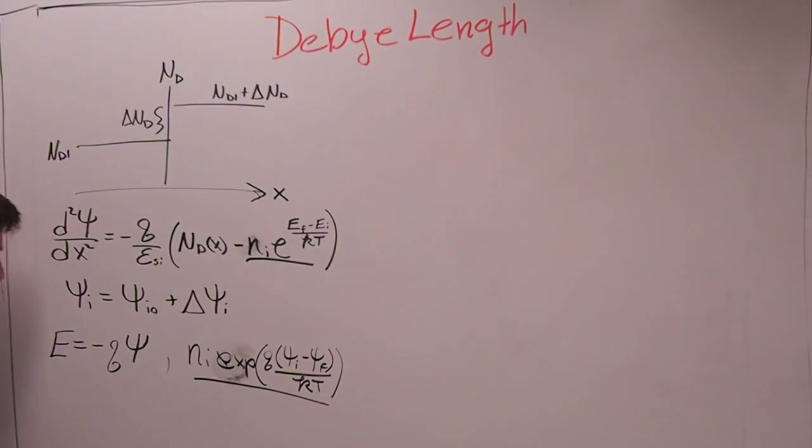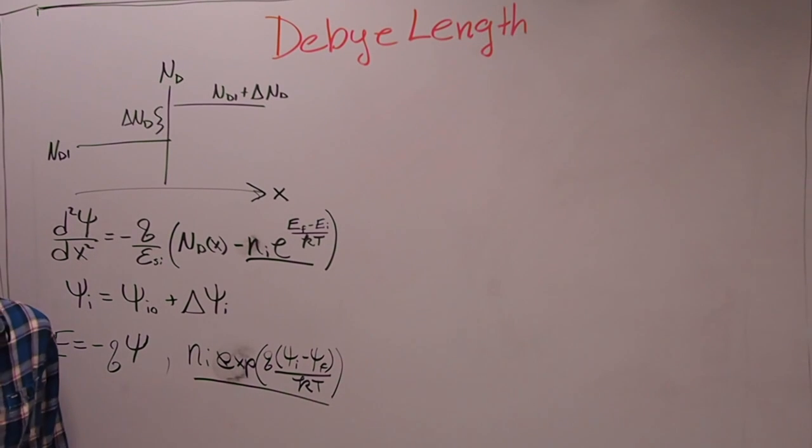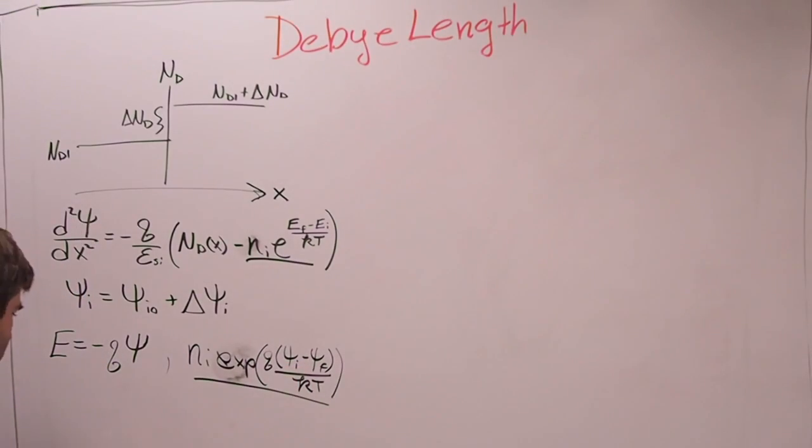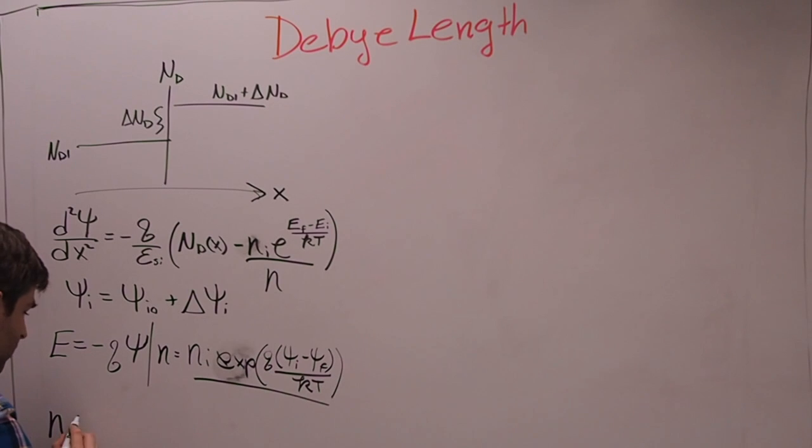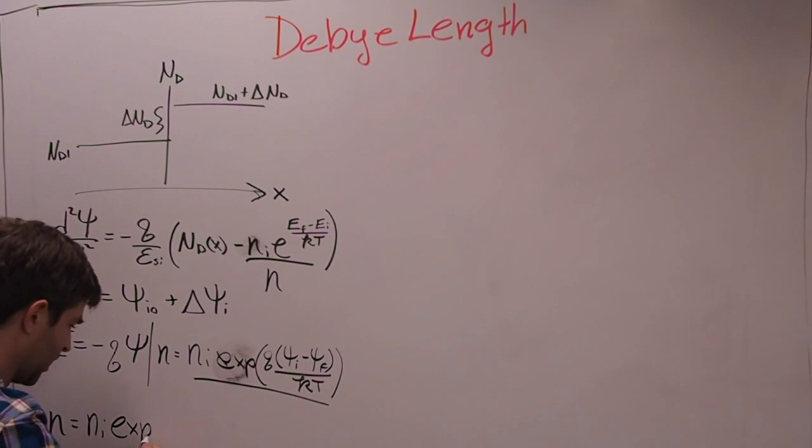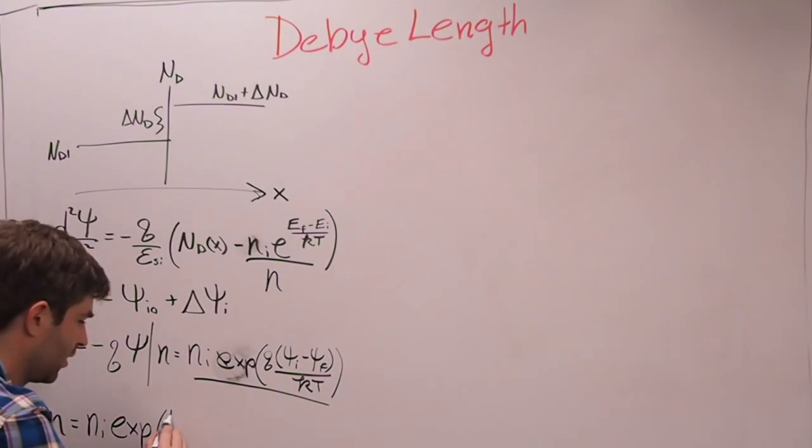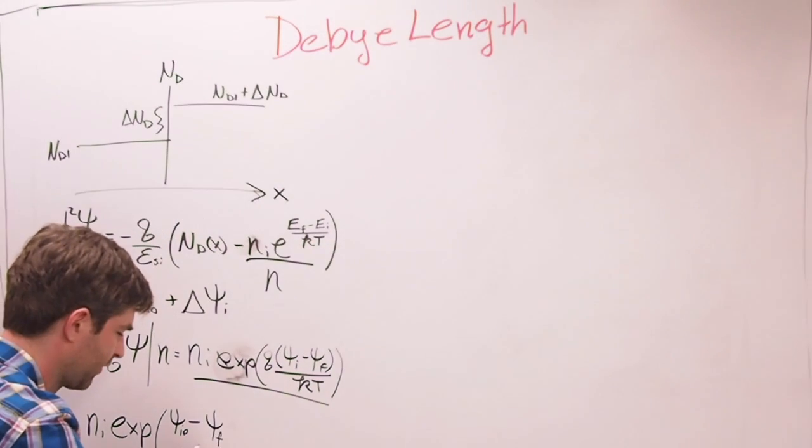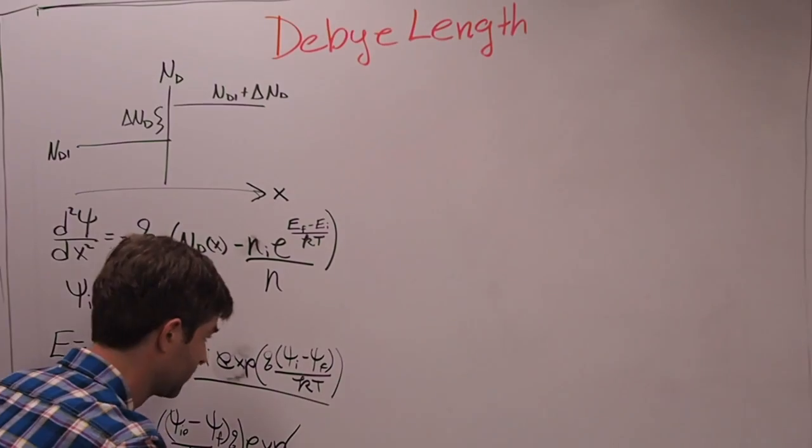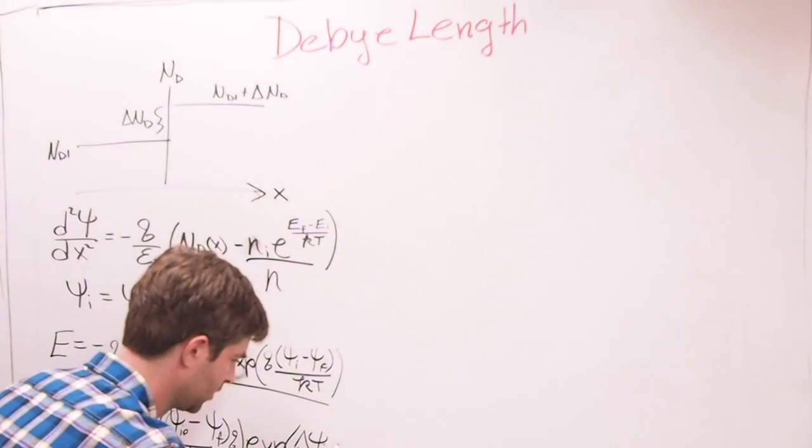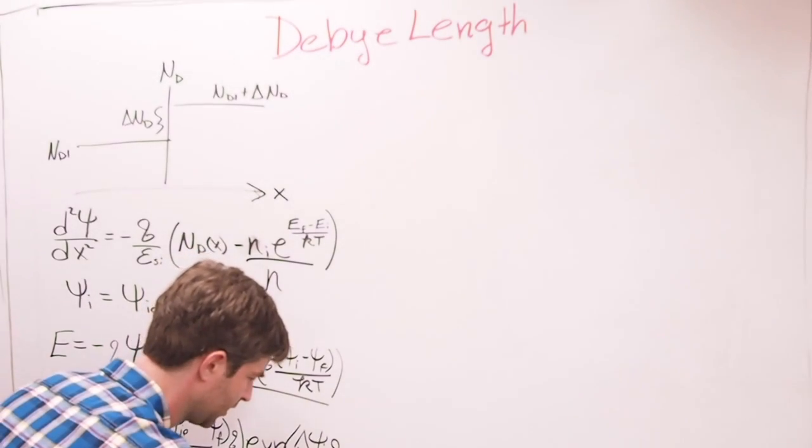So we can rewrite this term here into NI exponential Q phi I minus phi F over KT. So this is equal to this term right here. I just replace phi I with this term right here. I combined phi and phi F here, and then I separated delta phi I to that right there.